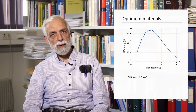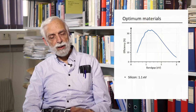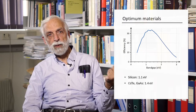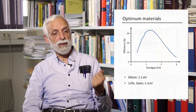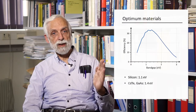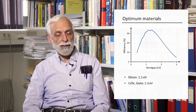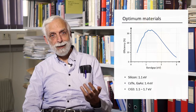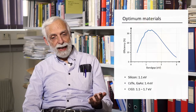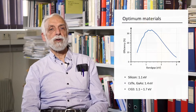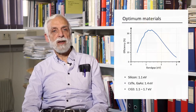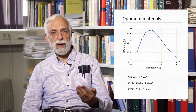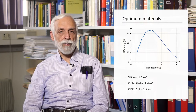Silicon has a gap of about 1.1 eV and is actually at the lower side of the optimum. Cadmium telluride is very good, and gallium arsenide is also very good — they have a value of about 1.4 eV, which is excellent for cell efficiency. CIGS, which is sold as a commercial solar cell, varies depending on the gallium content: if there is a lot of gallium, the value is 1.7 eV, and if there is no gallium — only indium — it's about 1.1 eV.